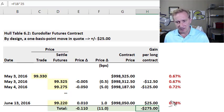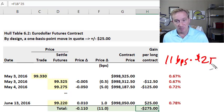I'll spell that out: 11 bps multiplied by $25 by design of the contract equals $275. That was by design.